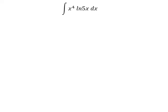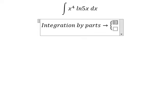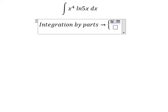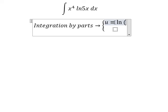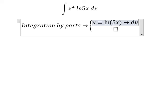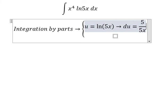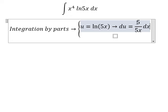We need to use integration by parts. So we put u equals to ln(5x). So if we do the derivative for both sides, you got du equal to 5 over 5x dx. So the 5s cancel, then we simplify.